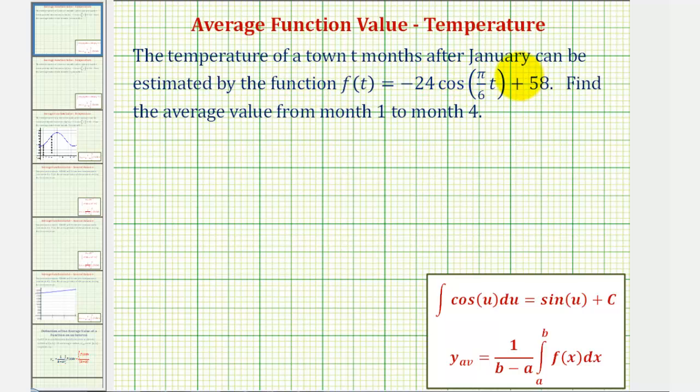The temperature of a town t months after January can be estimated by the function f(t) equals negative 24 cosine pi divided by 6t plus 58. We're going to find the average value from month one to month four.